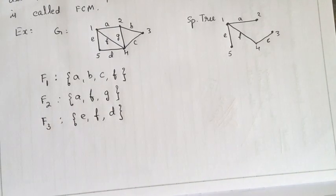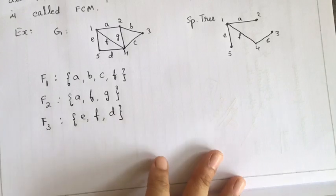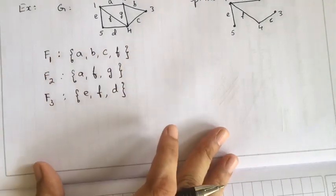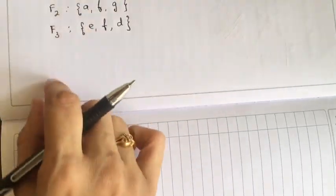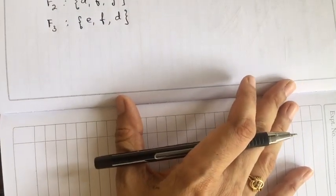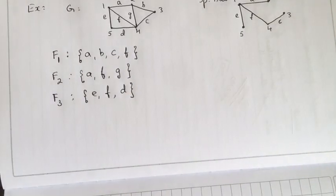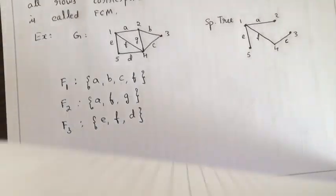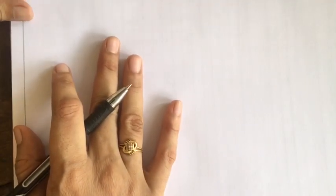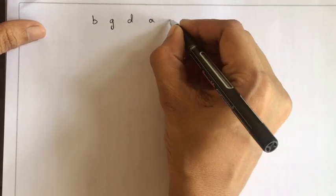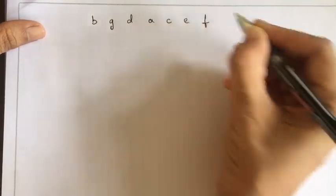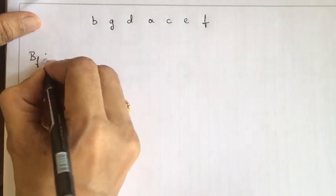Similar to the circuit matrix, we write the fundamental circuit matrix by taking these fundamental cycles. We take cycles along rows and edges along columns. For this, the edges can be named in any order. Here the order taken is: chords first — B, G, D — then branches A, C, E, and F. The reason for this ordering will be explained.